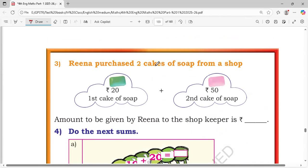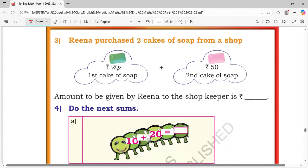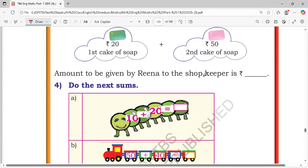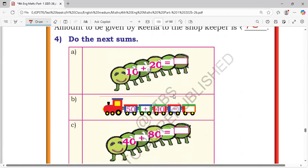Rina purchased 2 cakes of soap from a shop. One for 20 rupees, another one 50 rupees. Total Rina giving 70 rupees. 50 plus 20, 70.